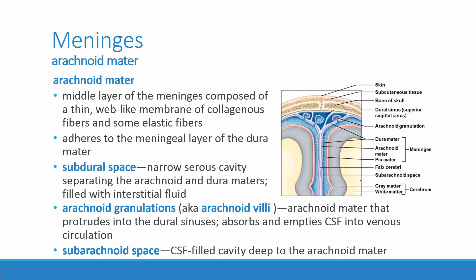The arachnoid layer — the middle layer of the meninges — is composed of a webby-looking membrane of collagenous fibers and some elastic fibers. It adheres to the inner layer of the dura mater with fibers that extend through the subdural space. There is a narrow serous cavity — the subdural space — that separates the arachnoid and dura maters and is filled with interstitial/cerebrospinal fluid.